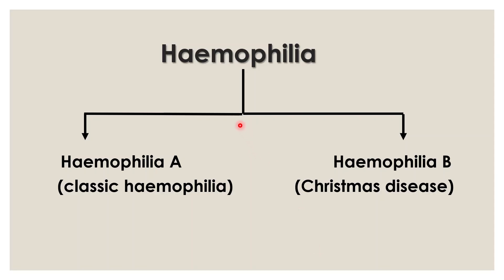Haemophilia is of two types: Haemophilia A, which is also known as classic Haemophilia, and Haemophilia B, which is also known as Christmas disease.